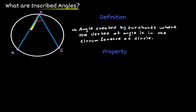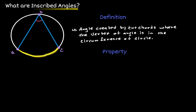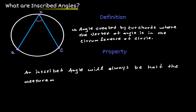The vertex of this angle is point B. Notice that when we created this angle, we also created an arc. There is a relationship between the inscribed angle and its opposite arc: the angle will always be half the measurement of the opposite arc. So if we call this angle X, the measurement of angle X is equivalent to half the measurement of arc AC.